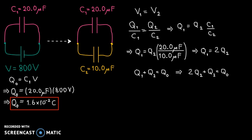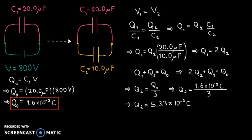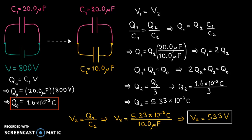Substituting 2 times Q2 for Q1, we get 2Q2 plus Q2 equals Q0. Solving for Q2: Q2 equals Q0 divided by 3, and substituting the numerical values we get Q2 equals 5.33 times 10 to the negative third Coulombs. Now that we know Q2 and C2, we can calculate the potential difference across the second capacitor, which is the same as across the first capacitor.